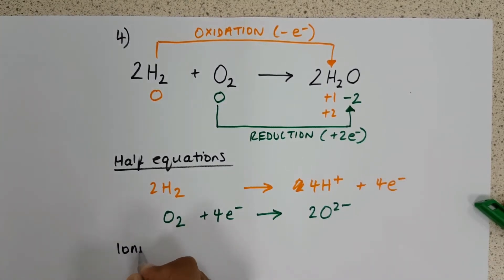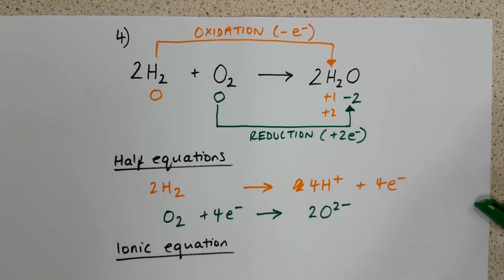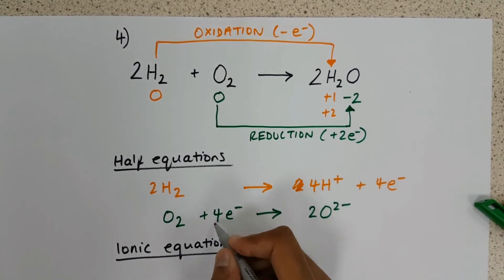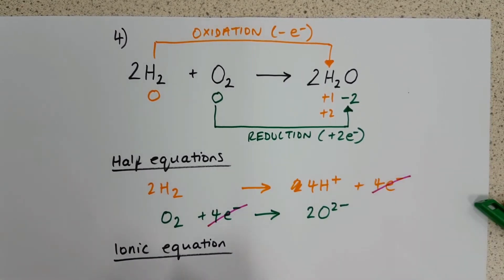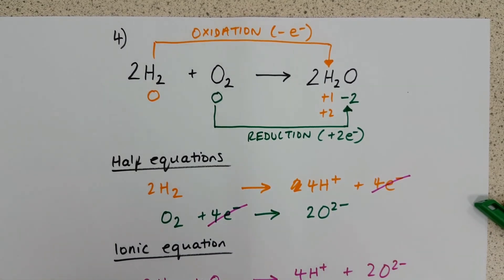The final step is our ionic equation, and if we combine the two, remember, we can eliminate the four electrons on either side, leaving behind 2H₂ plus oxygen, gives us 4H⁺ plus 2O²⁻.